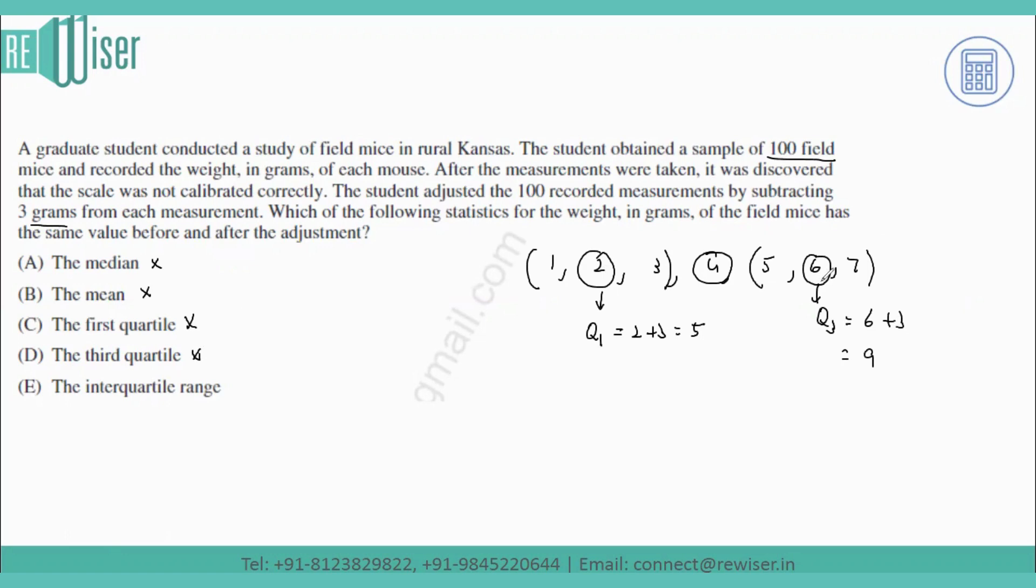Now in this case if I go for the interquartile range which is given as Q3 minus Q1, that equals 6 minus 2 which equals 4. Now if for the changed values also I'm going for the IQR or interquartile range, Q3 minus Q1 is given as 9 minus 5 which equals 4.